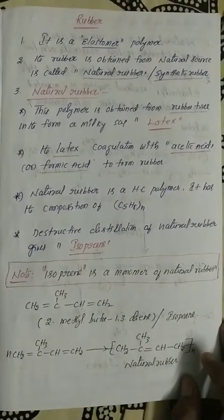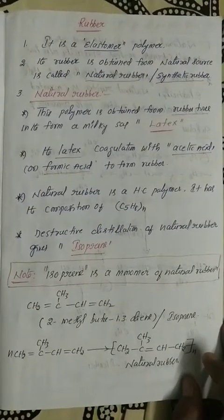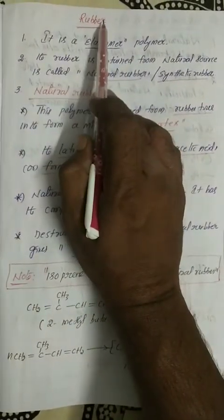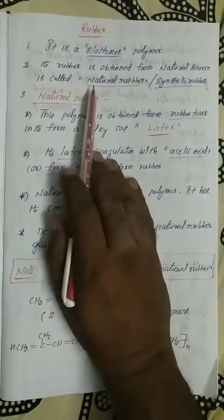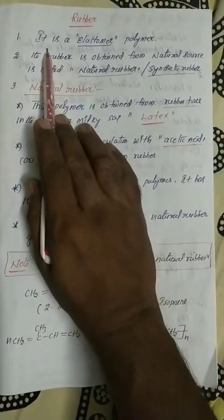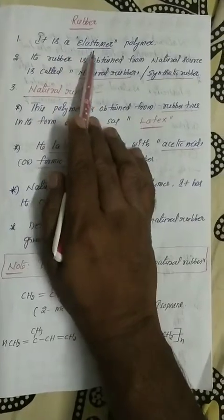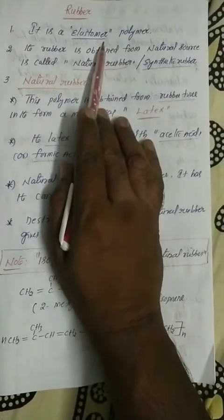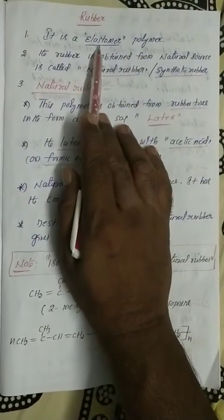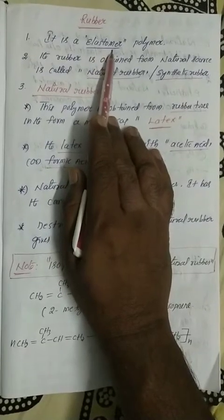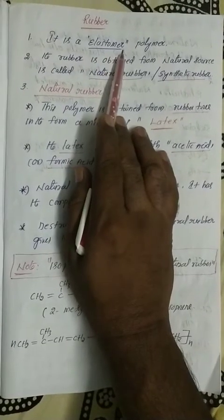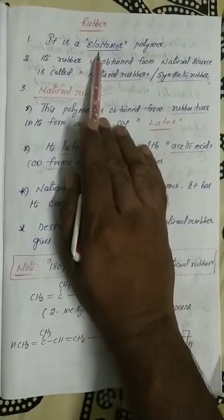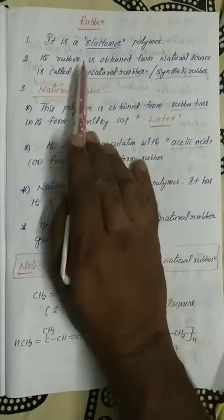The last part of the polymers topic is rubber. Rubber is an elastomer polymer. The meaning of elastomer is that weak intermolecular forces of hydrogen bonds are present, which is why rubber belongs to the elastomer category.